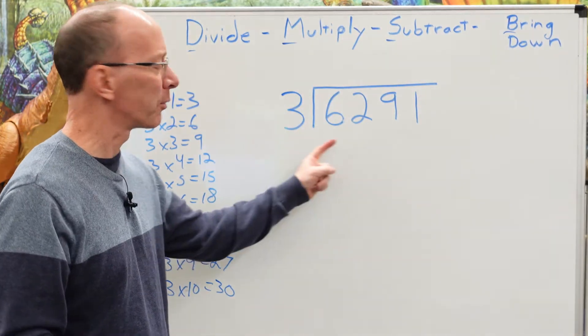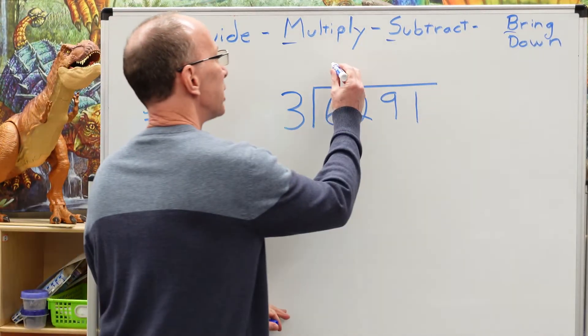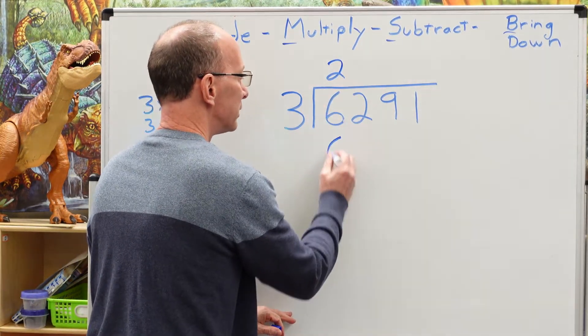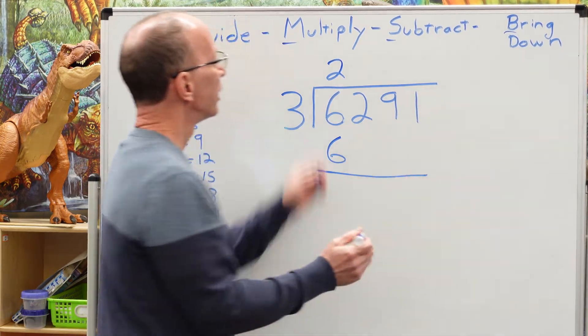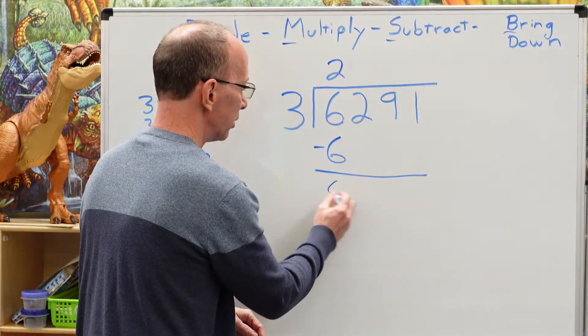How many times can I put three into six? Right here? Two times, two times. So we're going to put a two right here. Two times three would be six. Our next step, subtract. All right, we're going to subtract it. Zero.